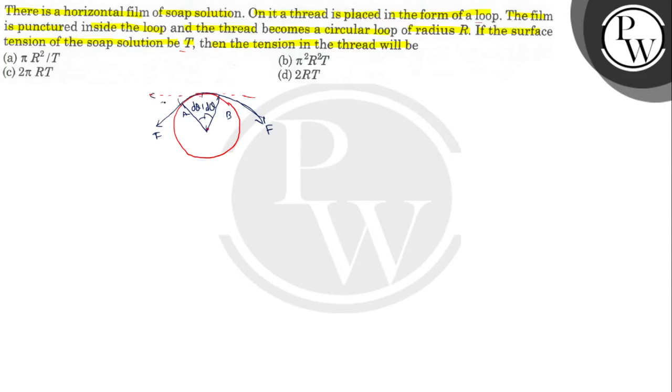Now the force - F is supposed to be what? What is the surface tension? It is radially outward. Here I can write: surface tension force is radially outward.